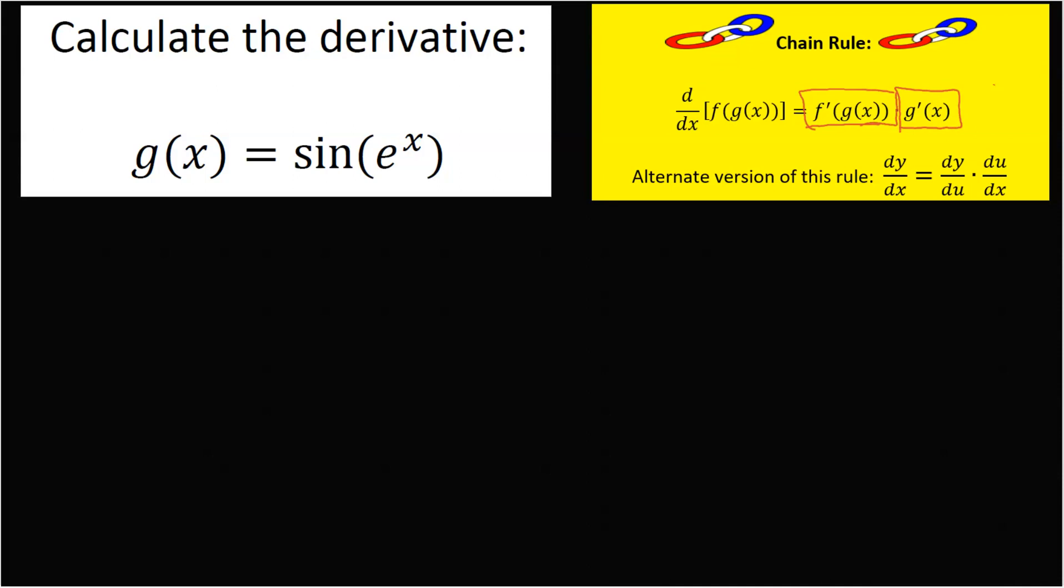Okay, the outside function in this case is sine of x and the derivative of sine is cosine, and then the inside function is e to the x, and lucky us, the derivative of e to the x is itself.